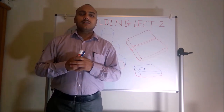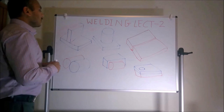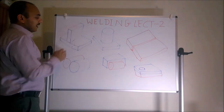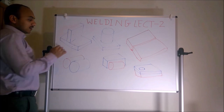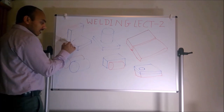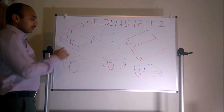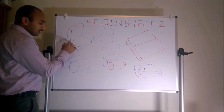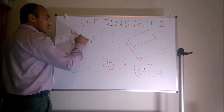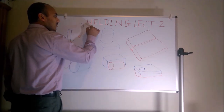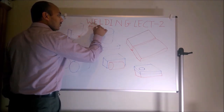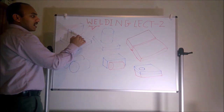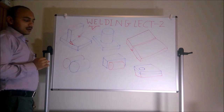Let us discuss how we can use welding symbols on a drawing. Suppose we have two components, one and two, and we want to weld them. The surfaces are at 90 degrees — whenever surfaces are at 90 degrees we should use the fillet weld symbol.